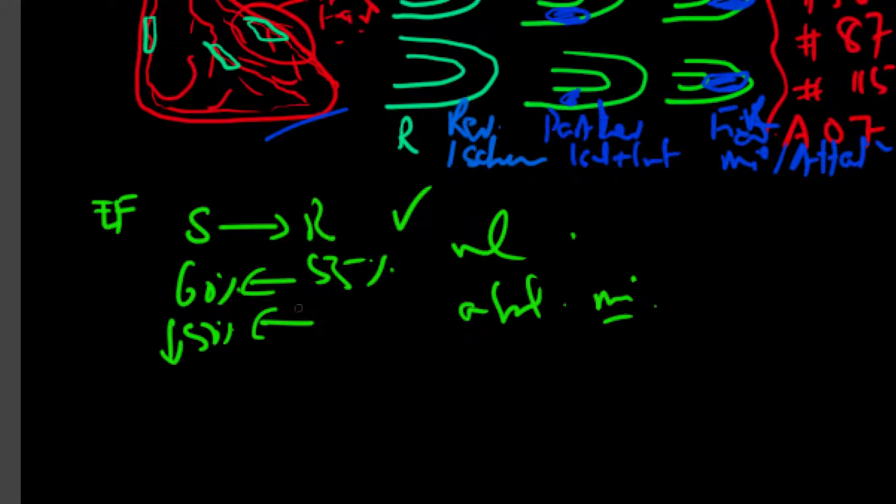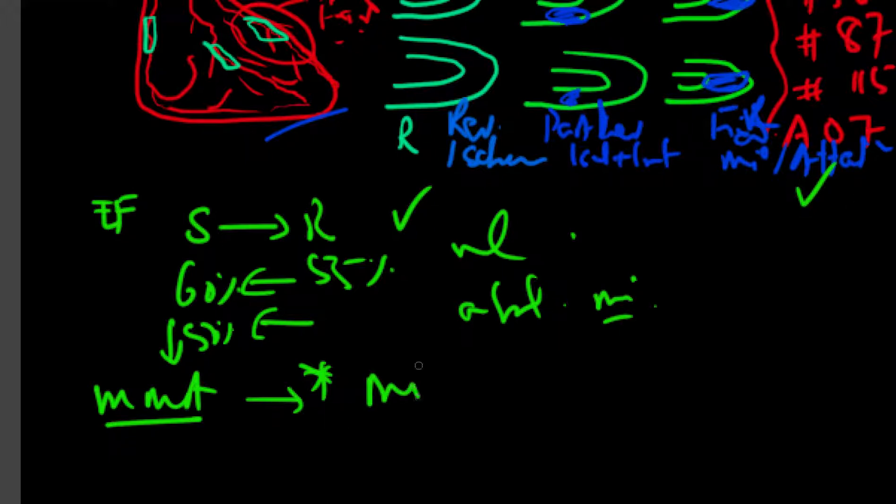Likewise, in reversible ischemia, you'll see a drop in EF. In partial ischemia, you may not see as much a drop, but in fixed defects, one may or may not see the ejection fraction drop. However, the wall motion abnormality will become very important in ruling out myocardial infarction versus attenuation or artifacts.